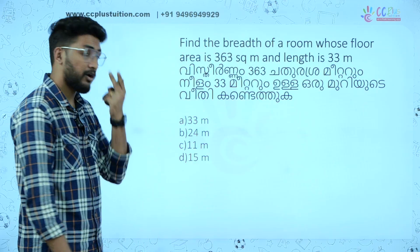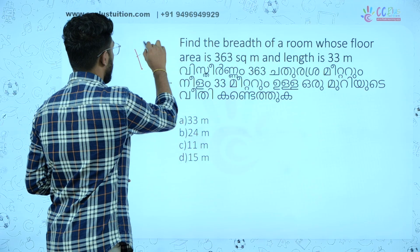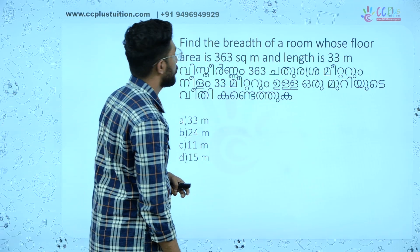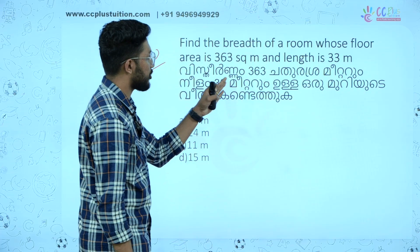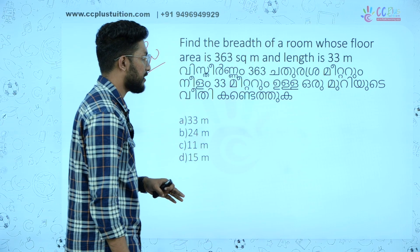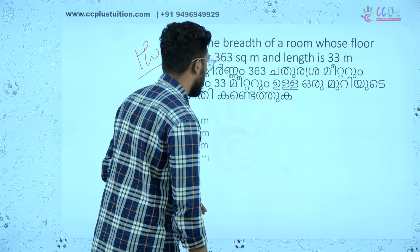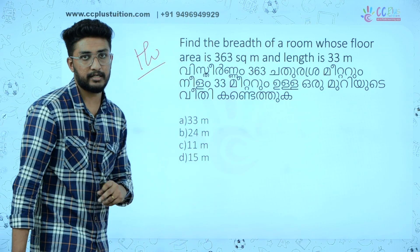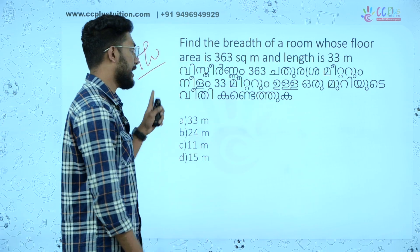Now the next question — homework: Find the breadth of a room whose floor area is 363 square meters and length is 33 meters.